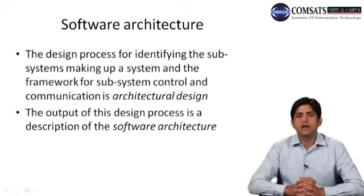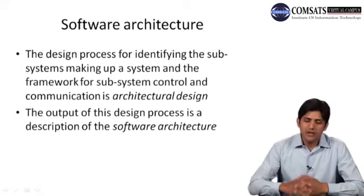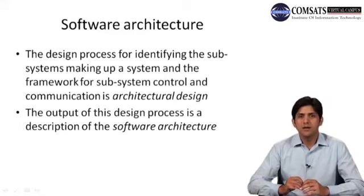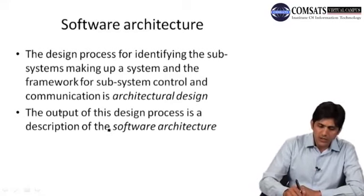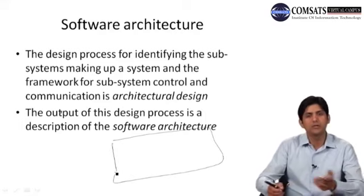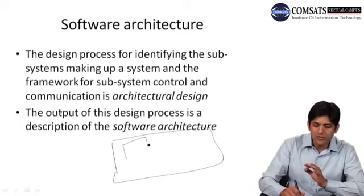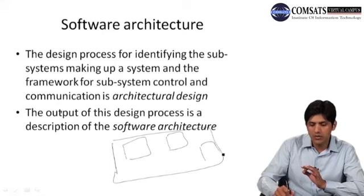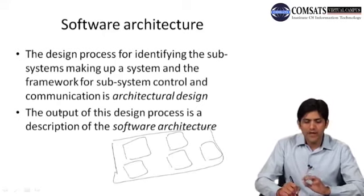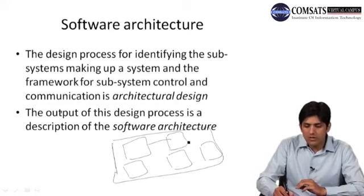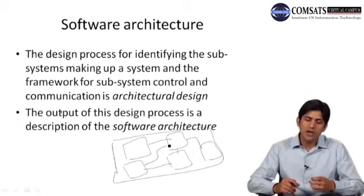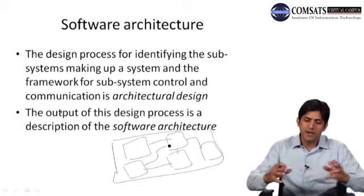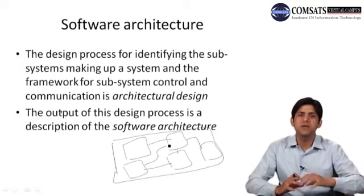Let's define software architecture. The design process for identifying the subsystems making up a system and the framework for subsystem control and communication is architecture design. For example, the process by which we decompose the whole product into subsystems — and the process by which they communicate with each other — is architecture design. Because when the product is going to work, these components would have to communicate with each other. So the communication, control of subsystems, and decomposition of a system into subsystems constitutes architecture design. The output of this design process is a description of the software architecture.